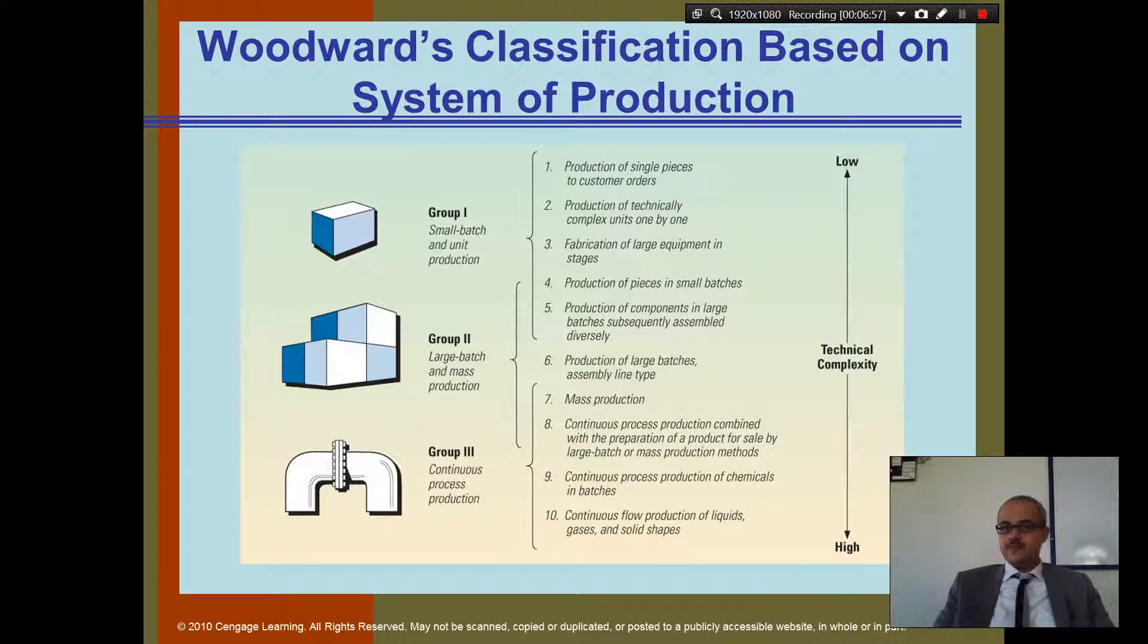The first five, basically if you look at them from the top, you produce one at a time. At the end, it's more like continuous production that's more complicated. And that's the technical complexity continuum. So here, very low technically complex. Very high technically complex. Number one here, you produce one piece for one customer. Now here, production of technically complex units, one by one. So you produce also one unit, but it's very complex. Let's say, for example, is the pizza complex or easy? Easy.